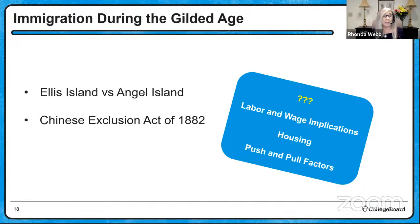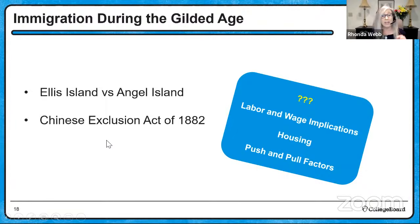Immigration picked up during the Gilded Age. Ellis Island primarily handled European immigrants, while Angel Island in San Francisco handled Asian immigrants, who usually had a very different experience — most were turned away, partly due to the Chinese Exclusion Act, which prevented Chinese immigrants from entering unless they had a direct relative already in the U.S. More immigrants coming in through Ellis Island drove down wages and created crowded housing.